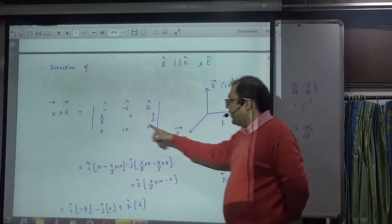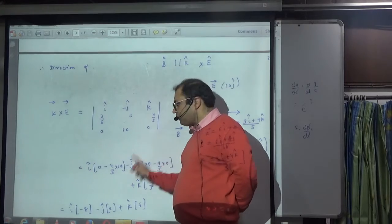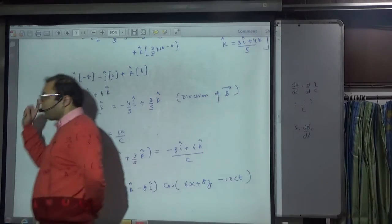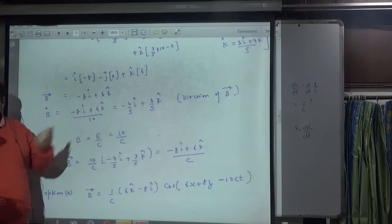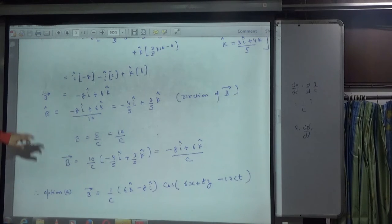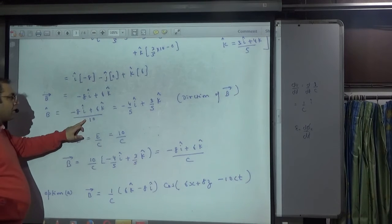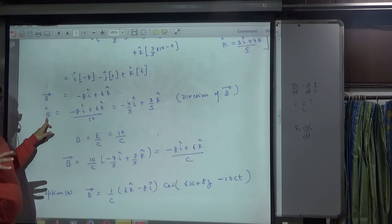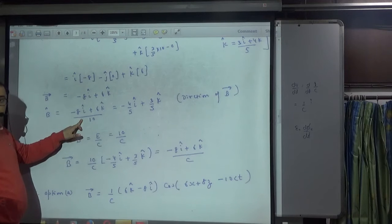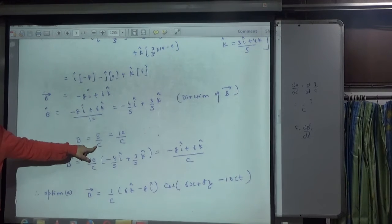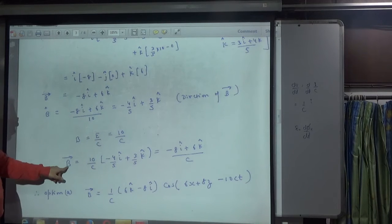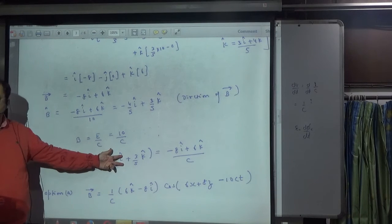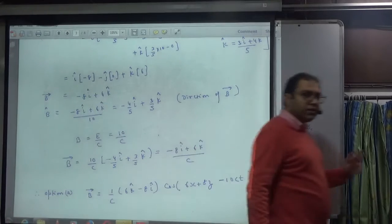This is your k-vector and this is your E-vector. Take the cross product: k-vector cross E-vector gives B-vector direction. Whatever answer comes from k cross E gives the B-vector direction. B-vector equals k-vector cross E-vector because they are perpendicular. Compute the cross product, then divide by 10 to get B-cap. The magnitude of B is E/c, so with E = 10, B = 10/c. Then B-vector equals magnitude of B times direction B-cap.